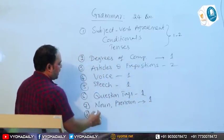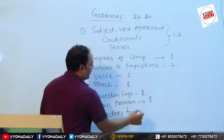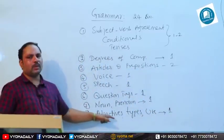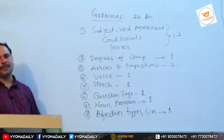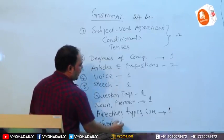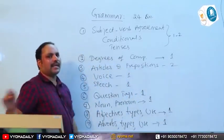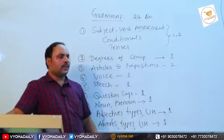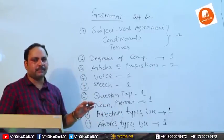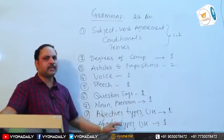The eighth area is adjectives — we need to know the types of adjectives and their correct use. The ninth is adverbs — we are asked to identify types and how to use adverbs correctly, including the correct order of adverbs. Do not confine preparation to just identifying parts of speech; also learn the types and correct usage of adjectives and adverbs.